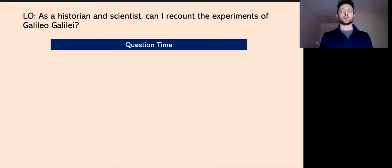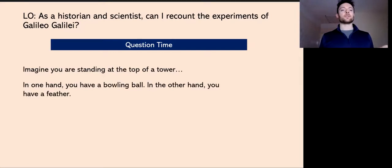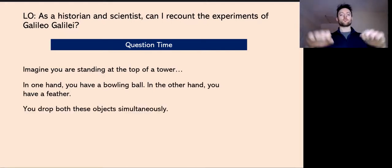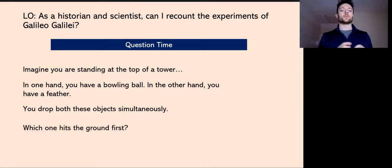We're going to start with a question time. Imagine you're standing at the top of a tower. In one hand you have a bowling ball, in the other hand you have a feather. You drop both these objects simultaneously from the same height at the top of the tower. Which one hits the ground first? Have a think. Pause the video and then come back and join me once you've had a chance to work it out.